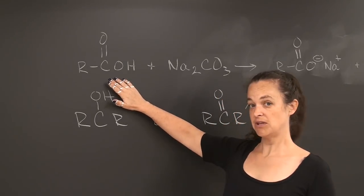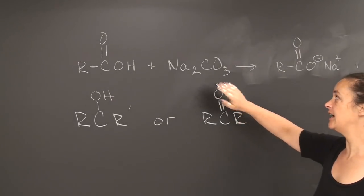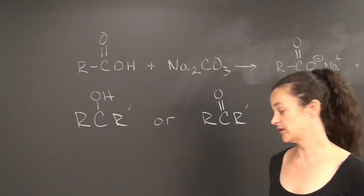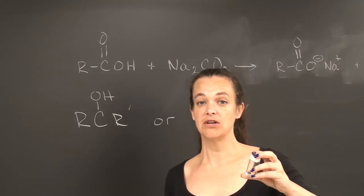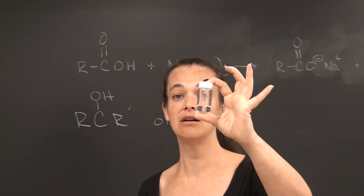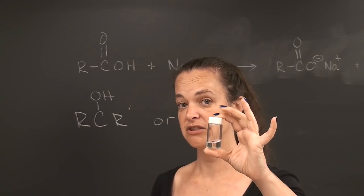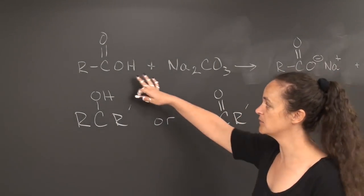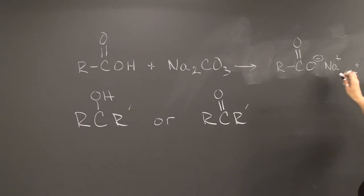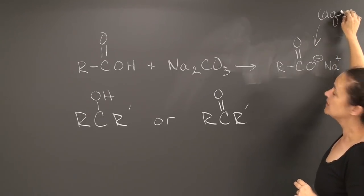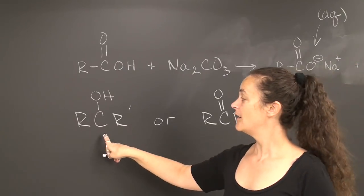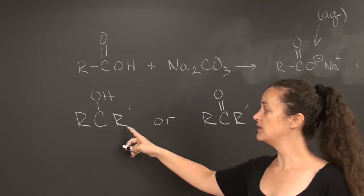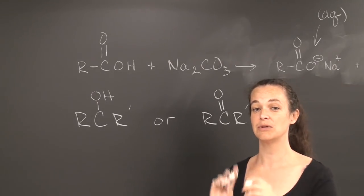A carboxylic acid, as you've already learned in class, can react with sodium carbonate to convert it to its sodium salt, at which point it becomes an ionic compound, which means it can be dissolved in water. Alcohols and ketones do not react this way — these are acid-base neutral compounds, so they will not be ionic and will stay in the organic MTBE layer.